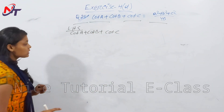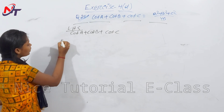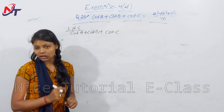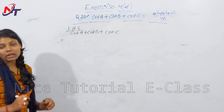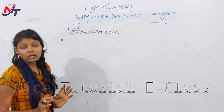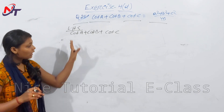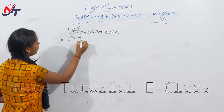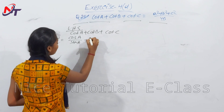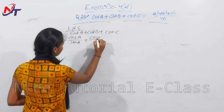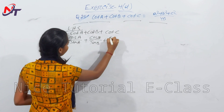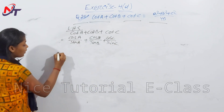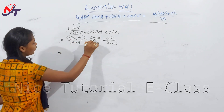Looking at cot, we convert to cos/sin: cot θ = cos θ/sin θ. So cot A = cos A/sin A, similarly cot B = cos B/sin B, and cot C = cos C/sin C.